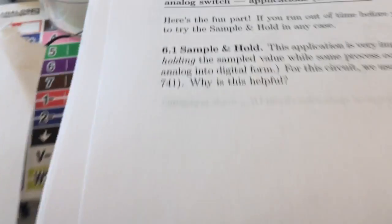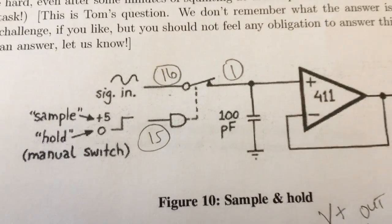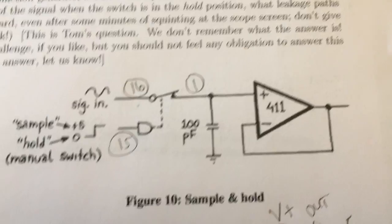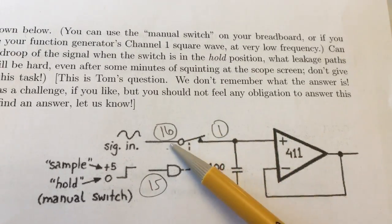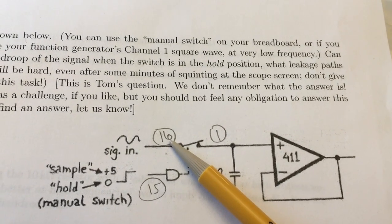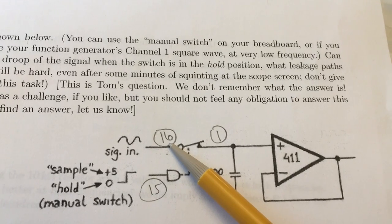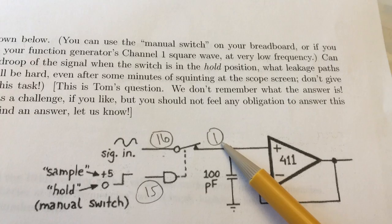Okay, this is Lab 20 Part 6.1, the sample and hold circuit. So here is the sample and hold circuit we want to build. This is the source of one channel, the analog switch. This is the drain.